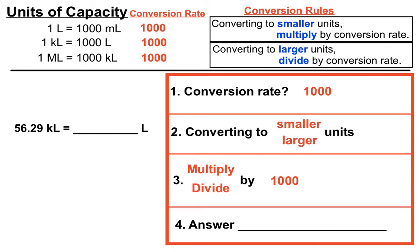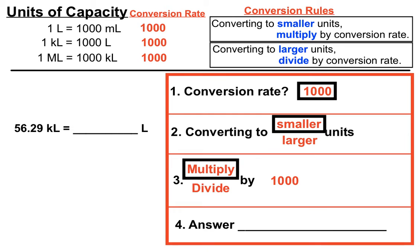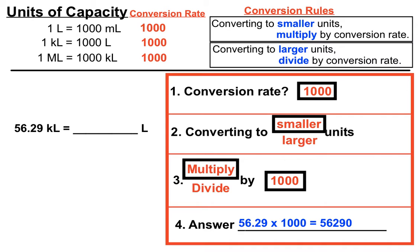Next, we're converting to litres from kilolitres. Our conversion rate is a thousand. Litres are smaller than kilolitres, so we're converting to smaller units. According to our conversion rules, converting to smaller units means we're multiplying again. So we multiply by a thousand, which gives us 56,290 litres.